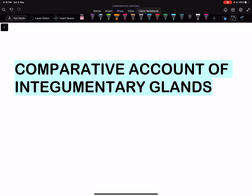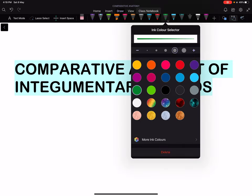Yesterday we told different types of glands and their classification. Today we will do a comparative account in vertebrates. In different classes, we will do a comparison of glands today.